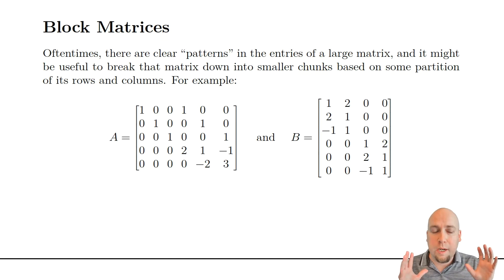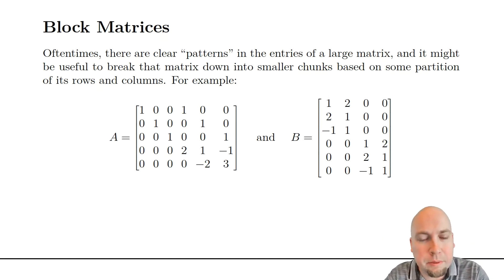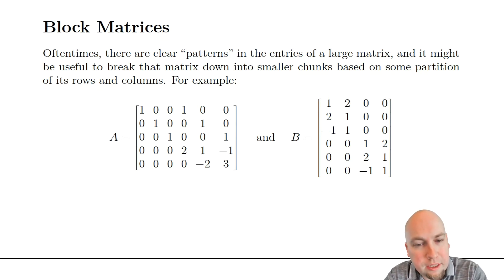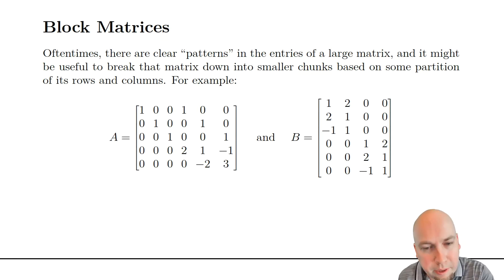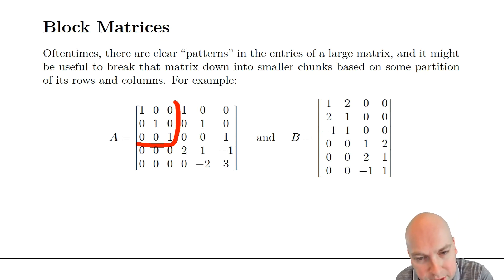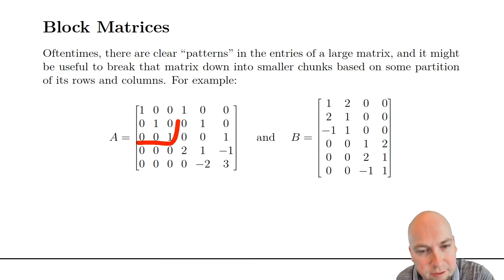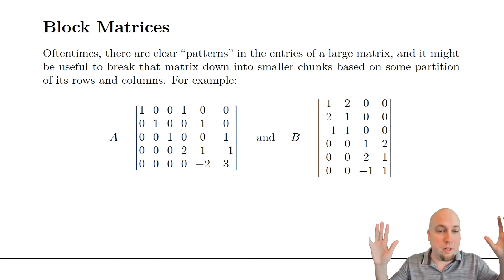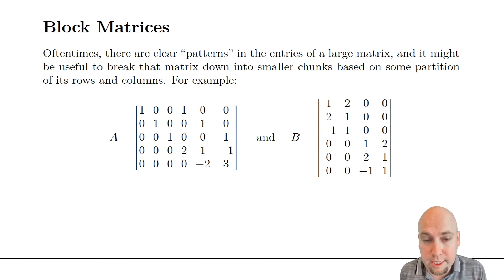To illustrate this more concretely, consider these two matrices. In matrix A, if I look at the top left three-by-three corner, that's a three-by-three identity matrix sitting there. There's other junk elsewhere in the matrix, but this top left block is easy — I know about three-by-three identity matrices. They work very nicely with matrix multiplication.